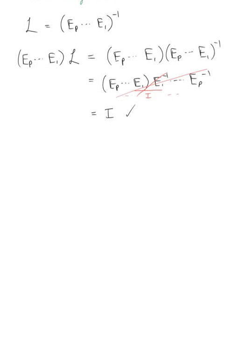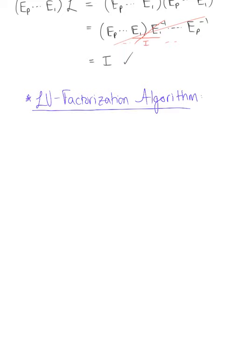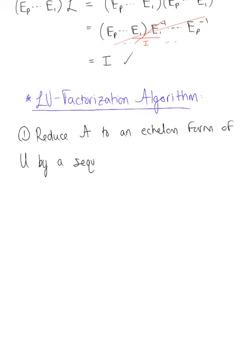We are now ready to define the steps of our LU factorization algorithm. Step one: reduce matrix A to an echelon form U — our upper triangular matrix — by a sequence of row replacement operations, as shown above, if possible.